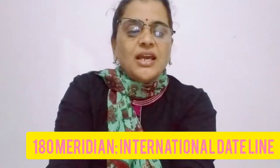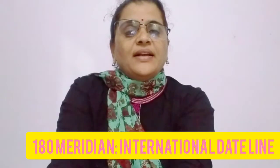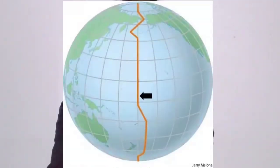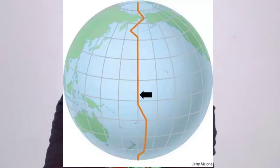The 180 degree meridian, opposite to the zero meridian, is called the International Date Line (IDL). This meridian passes completely through the Pacific Ocean and is zigzag in shape. When someone crosses this 180 degree meridian, they have to change the day and date — that is why it is called the International Date Line.